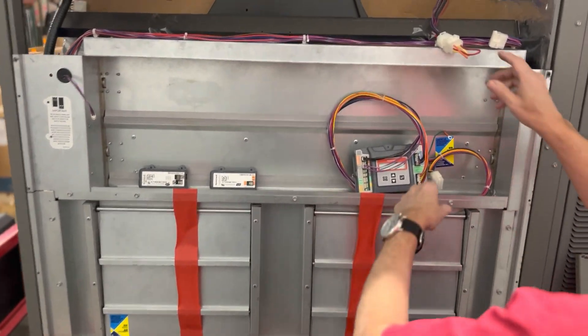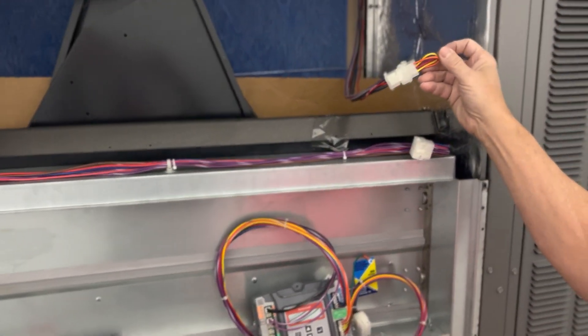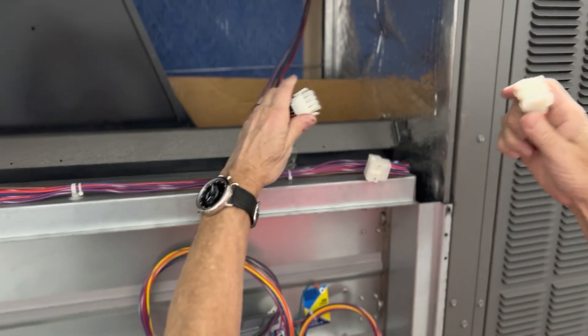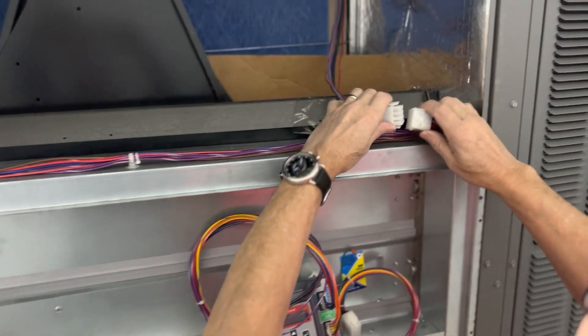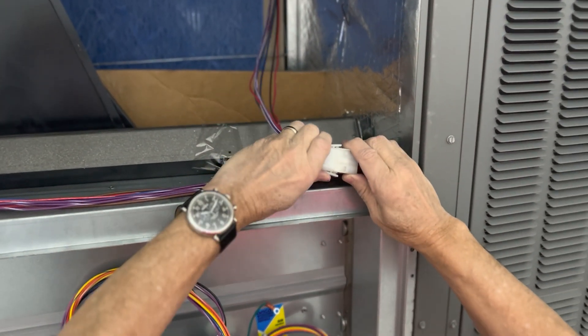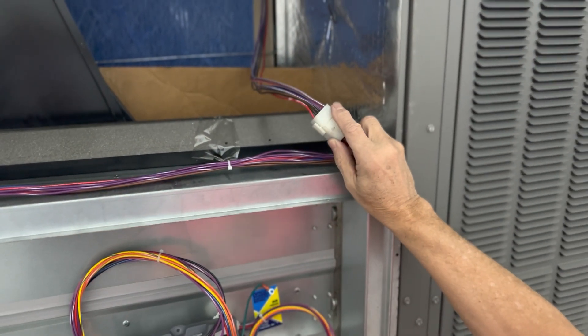When you get the unit, you have a wiring harness with a jumper plug in it. You're going to remove the jumper plug and save that for another step in a moment. We're going to put this plug into the economizer mating plug. We're now connected to the unit.